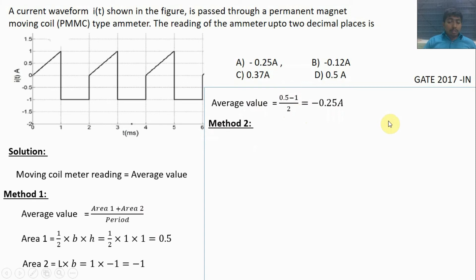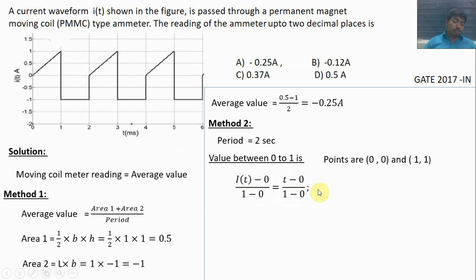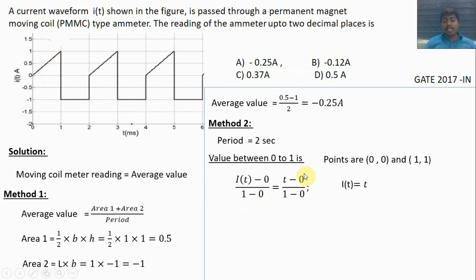For method 2, the period is 2 seconds. The values between 0 to 1 form a straight line. Using the straight line formula: y minus y1 divided by y2 minus y1 equals x minus x1 divided by x2 minus x1 — with points (0, 0) and (1, 1) — we get i(t) equals t. When t equals 1, i(t) equals 1; when t equals 0.5, i(t) equals 0.5; when t equals 0, i(t) equals 0.